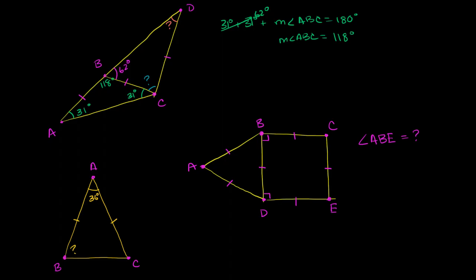Now this angle is one of the base angles for triangle BCD. This side and this side are congruent — BC has the same length as CD. Those are the two legs of an isosceles triangle, kind of turned upside down. This is the vertex, this is one base angle, this is the other base angle. Since the base angles are congruent, this is going to be 62 degrees as well.